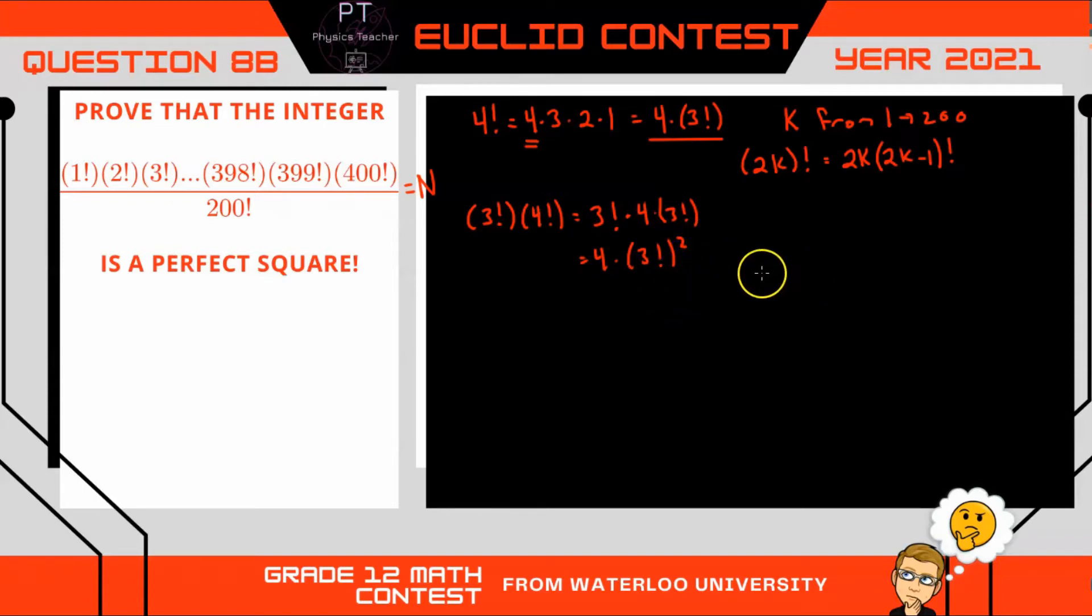So what I'm doing here is I'm going to take every two integers, such as 1 factorial, 2 factorial, and I'm going to rewrite them. So for example, every odd integer, 2k minus 1 factorial, times by the next even integer, 2k factorial, I'm going to rewrite as 2k times 2k minus 1 factorial squared.